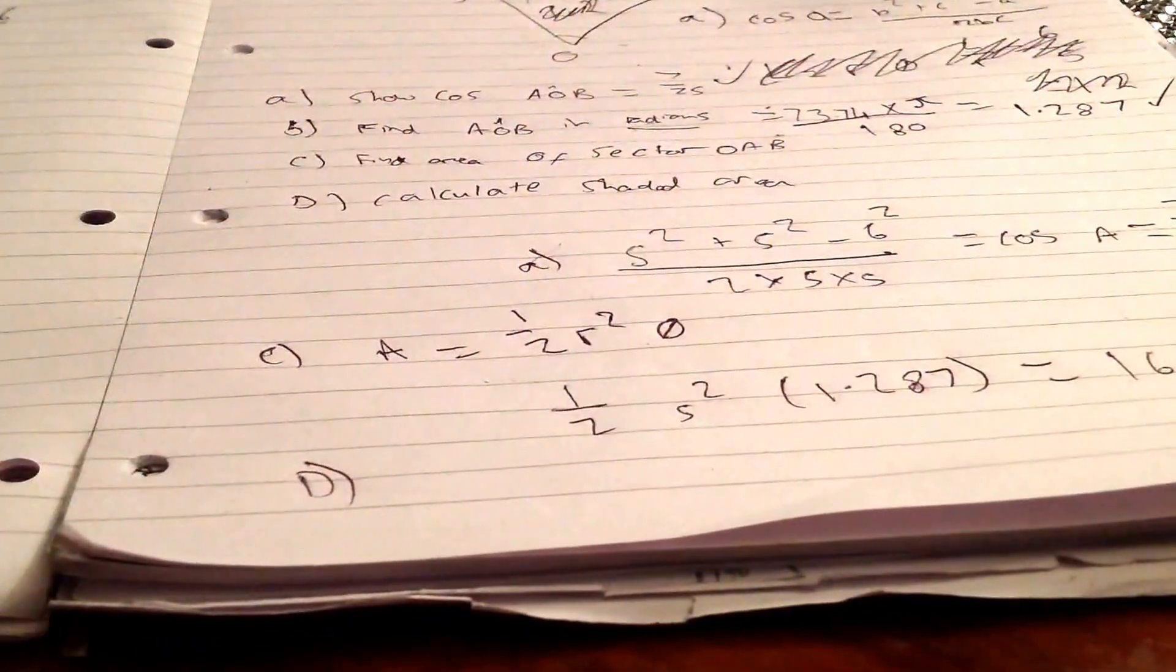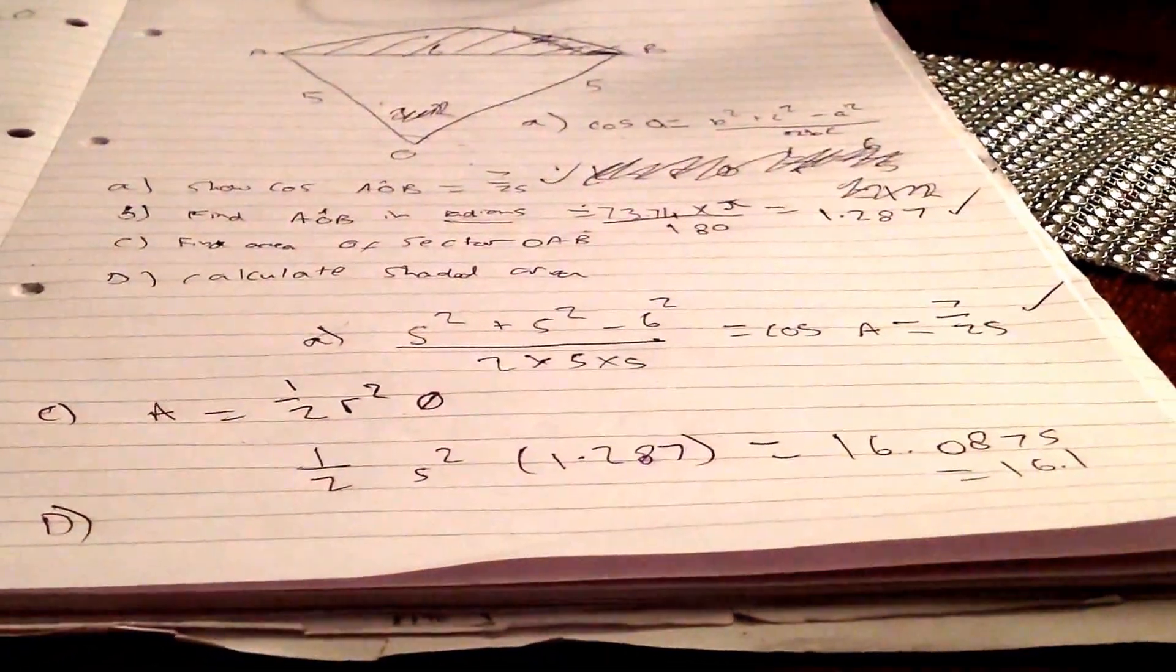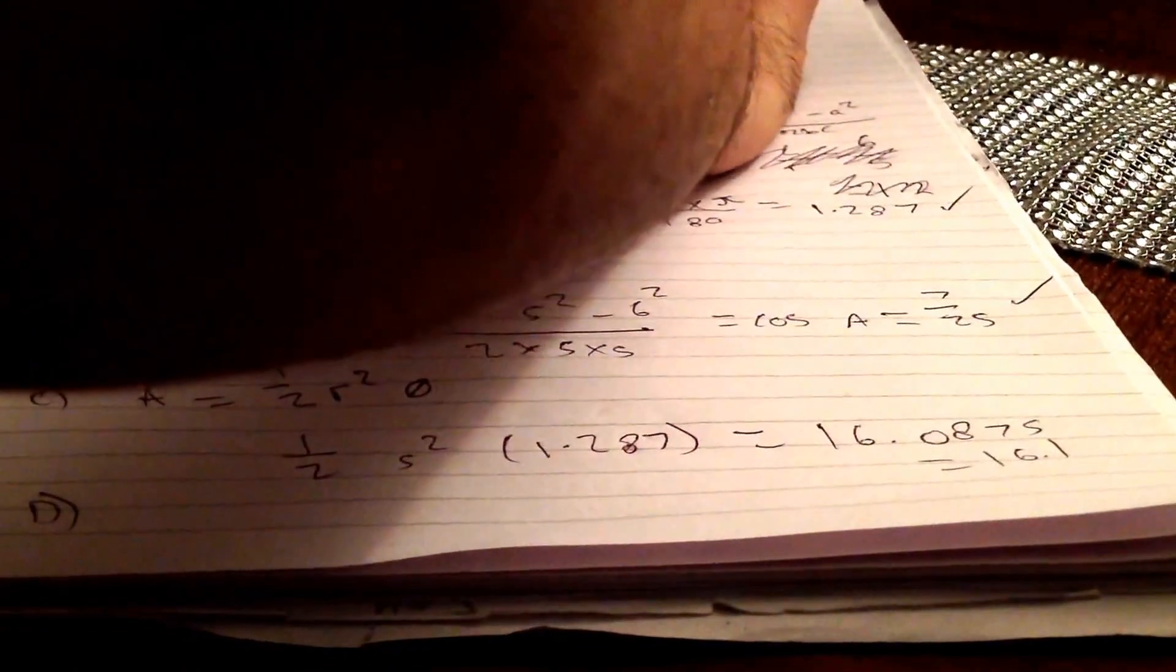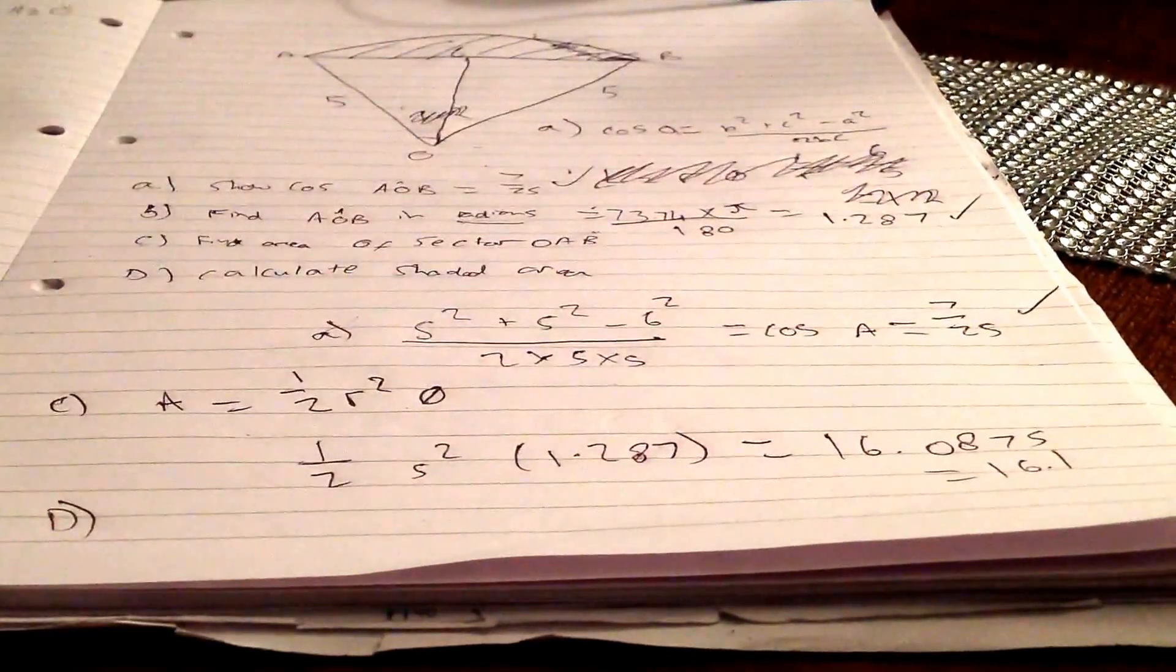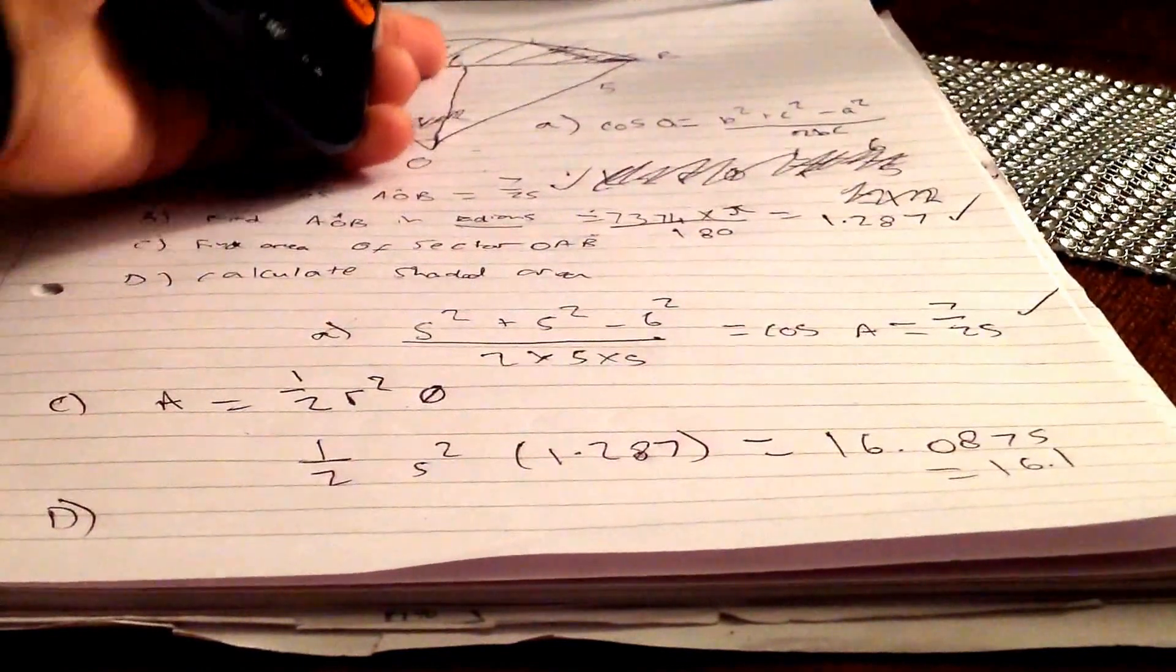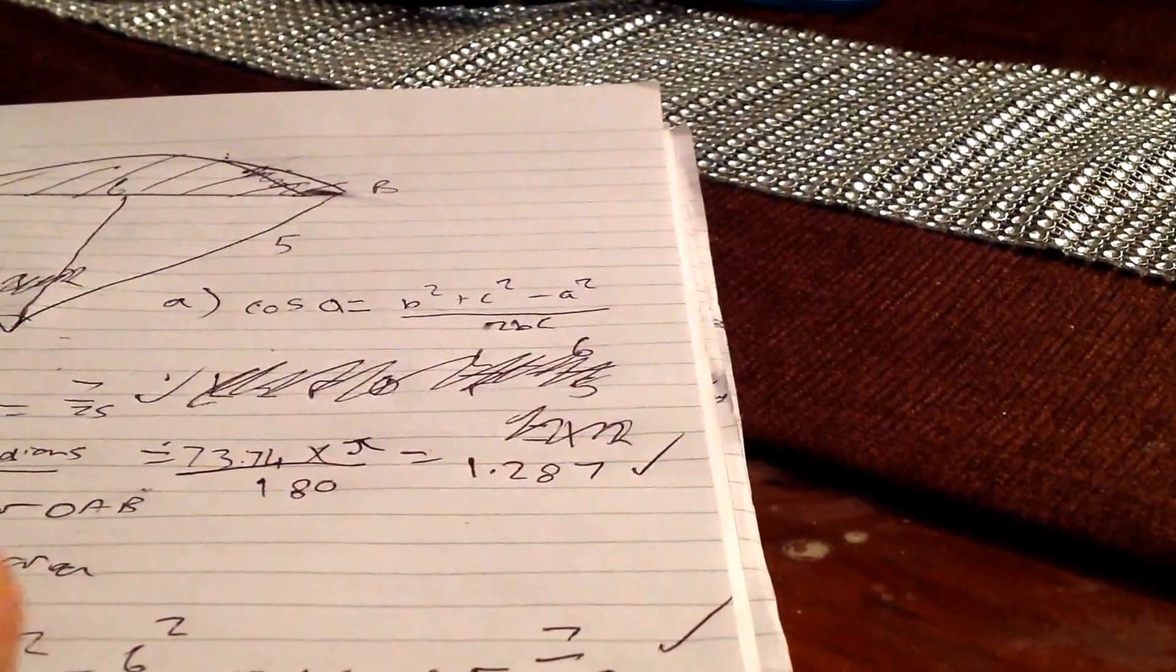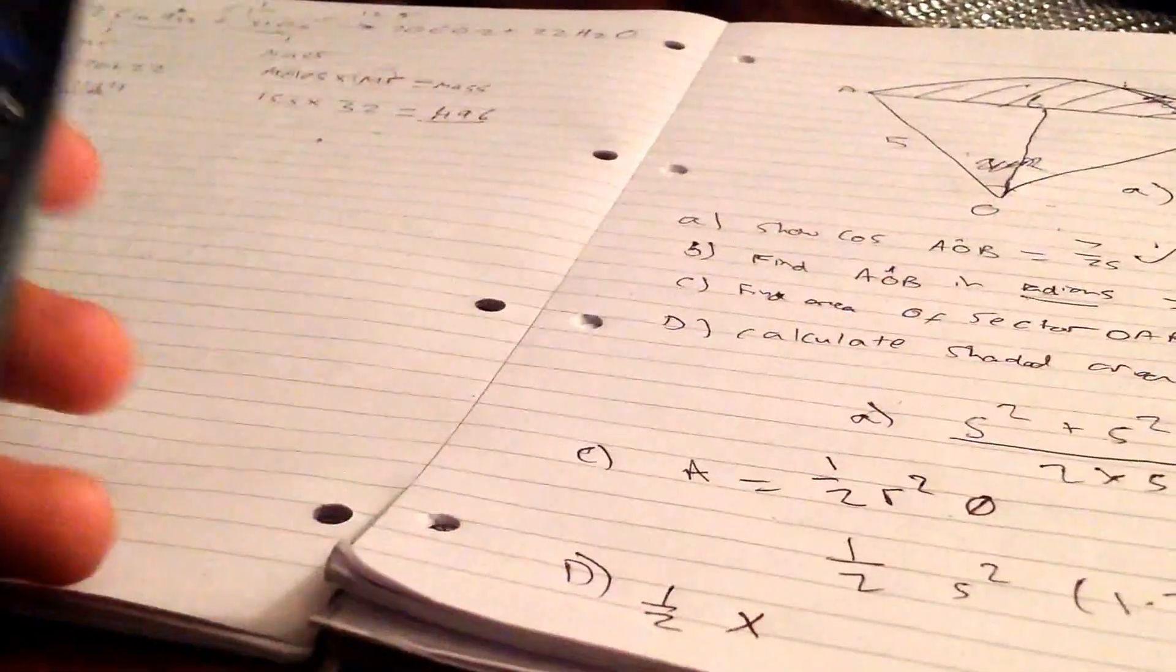Now part D. This one's a bit tricky. Here's what I would recommend doing. You see this triangle—you can effectively split it down the middle, and then you have two right-angled triangles. Then you can do half AB times three... what is it?